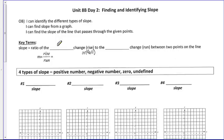This is Unit 8B, Day 2, finding and identifying slope. At the end of the section, you will be able to identify the different types of slope, find slope from a graph, and find the slope of the line that passes through the given points.